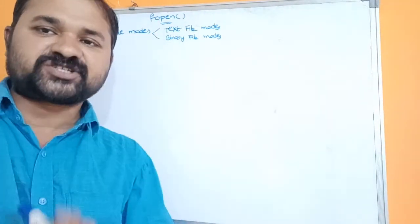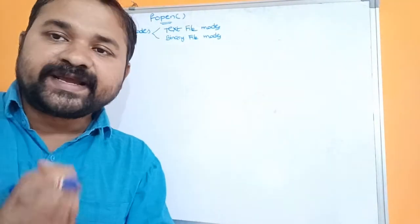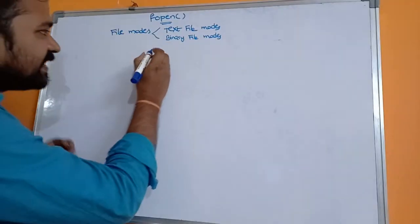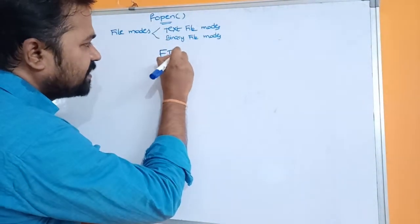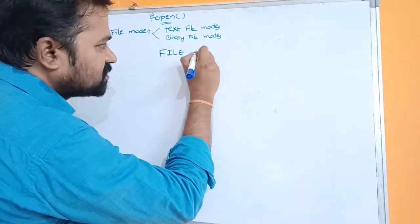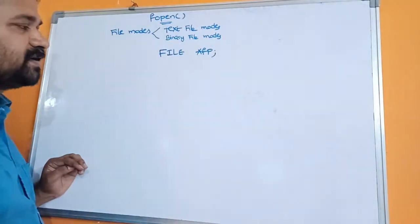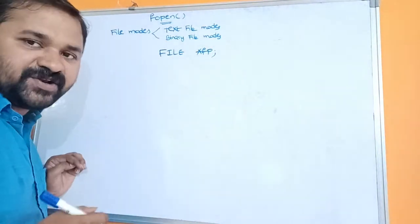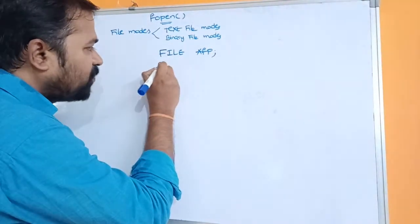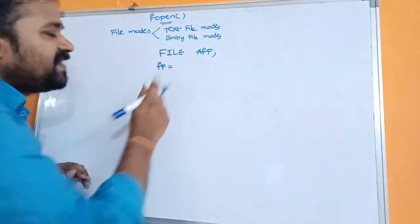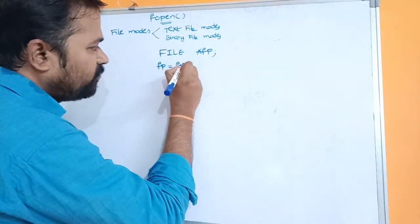First let's see what is the fopen function. Before that, let's see how to declare a file. We can declare a file with the help of FILE in uppercase letters, space, then the file pointer name. So this is for declaration of a file. Once a file pointer is declared, we have to open the file with the help of fopen function.